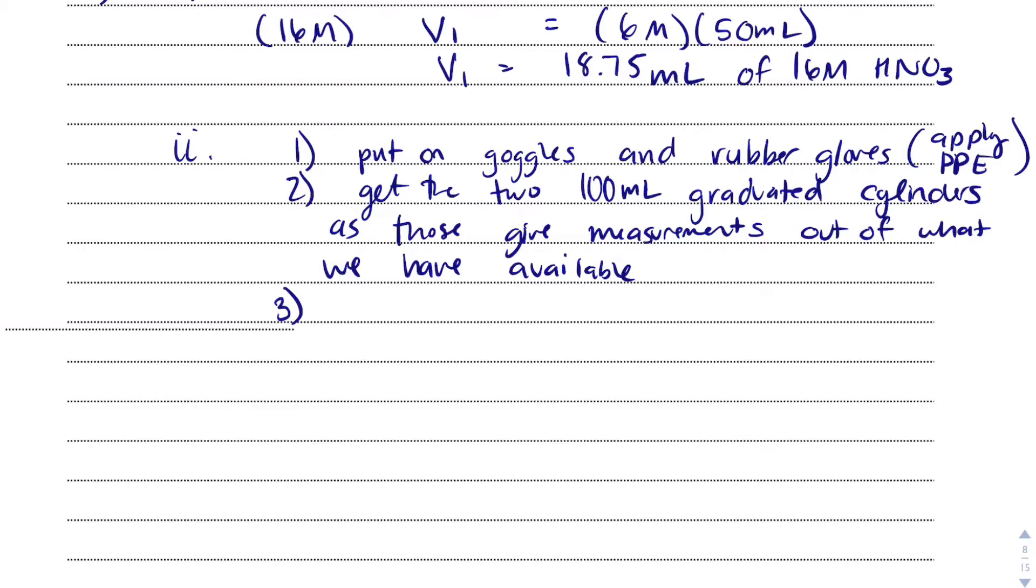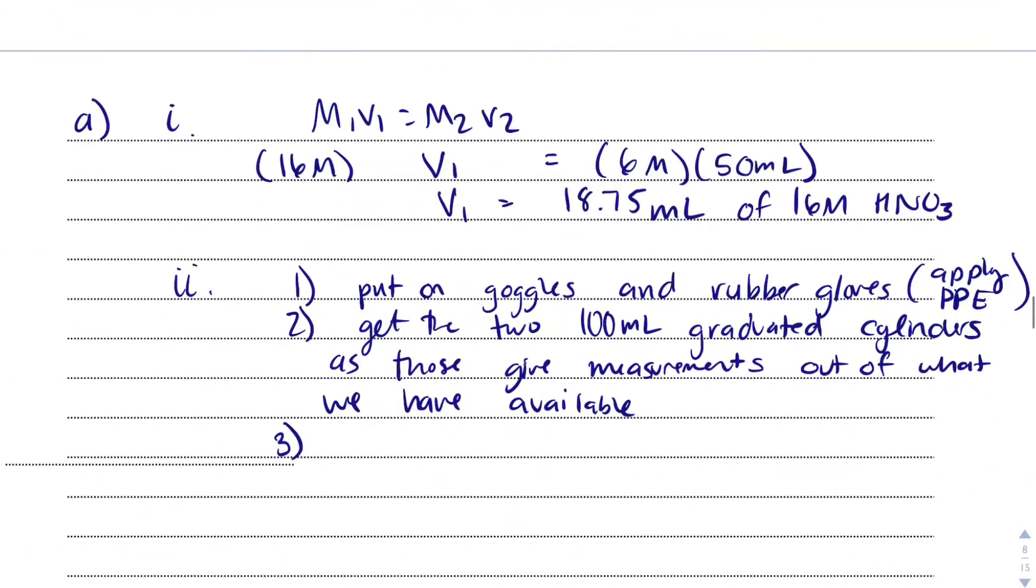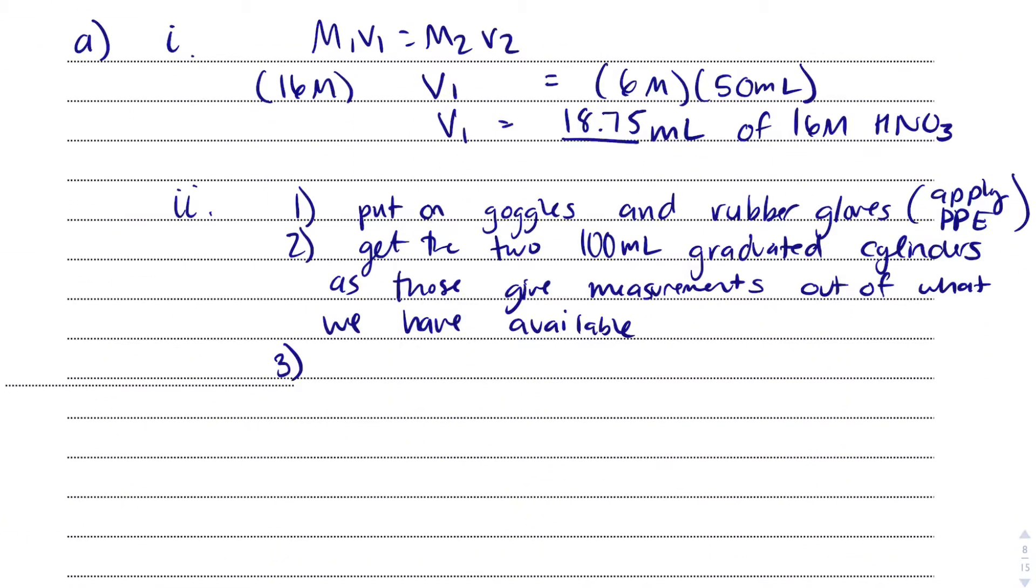Now I'm going to measure. They only measure to the one's place, so we can measure one place further. Instead of measuring 18.75, we're going to have to be stuck with 18.8, and that's totally fine for the level of lab work we're doing here. We're going to measure 18.8 milliliters of 16 molar HNO3 using the 100 milliliter graduated cylinder. And you could put, be very careful - if you've used 16 molar nitric acid, you know it's very dangerous to use.